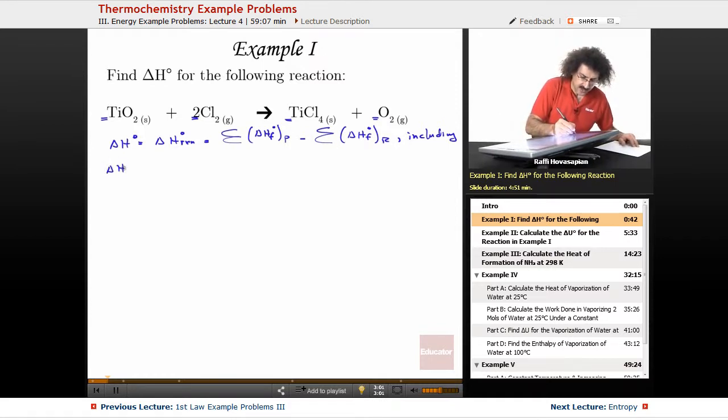So we have delta H is equal to, now delta H for elements in their standard state is zero. So this is chlorine gas, Cl2, so that's going to be zero, and O2 gas, so that's going to be zero. So we only have to worry about that one and that one right there.